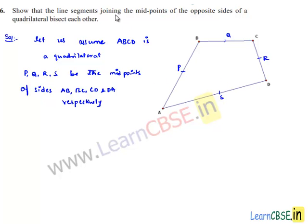We are required to prove that line segments joining midpoints of opposite sides bisect each other, i.e., QS and PR bisect each other.